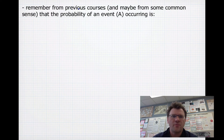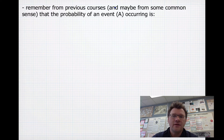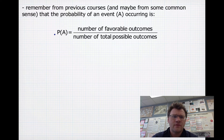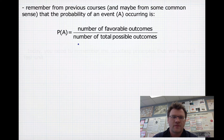Remember from previous courses, the probability of an event A occurring — written as P(A) — is the number of favorable outcomes over the number of total possible outcomes.